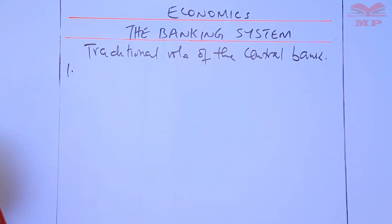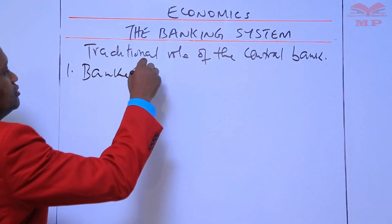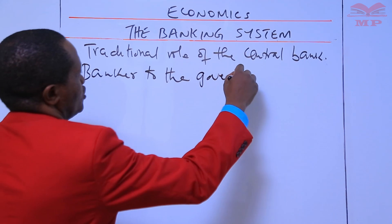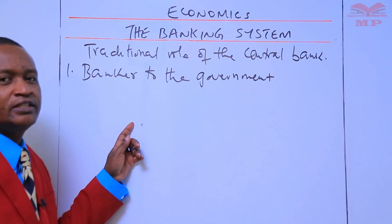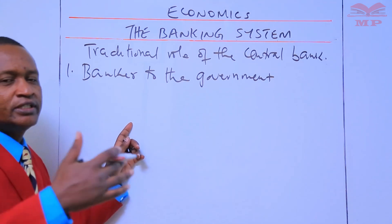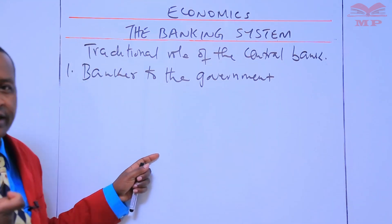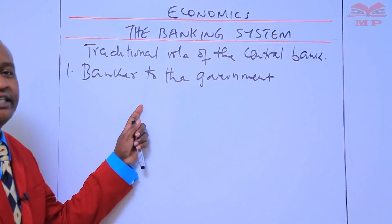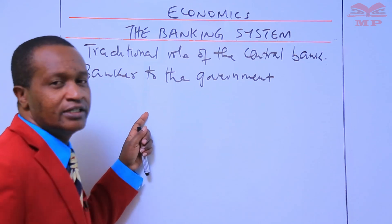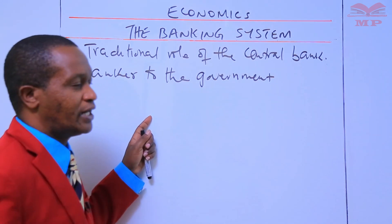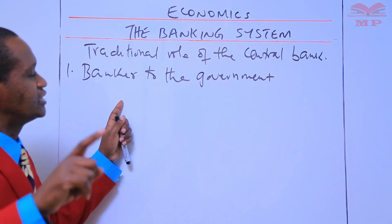Number one: the central bank is the banker to the government. That is the first traditional role. The government may need to hold their funds in an account into which they can deposit money and from which they can withdraw money. Such an account is held at the central bank. When the government deposits money, such deposits are held by the central bank.